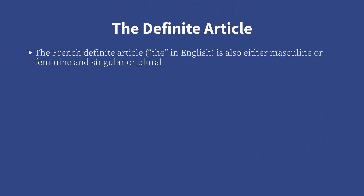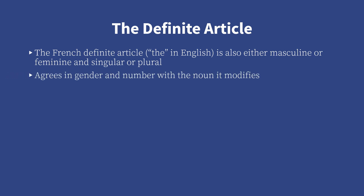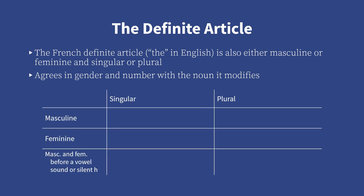The definite article. Unlike in English, the French definite article — or 'the' in English — is also either masculine or feminine, and singular or plural, and agrees in gender and number with the noun it modifies. The singular definite articles are le for masculine, la for feminine, and l' if the article is followed by a word that begins with a vowel sound or a silent h, while the plural definite article for all three is les.